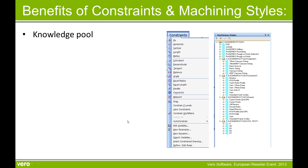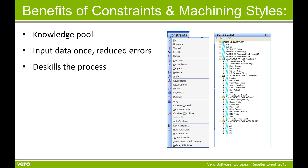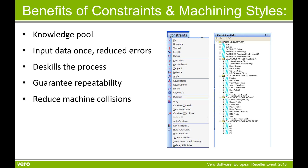Some of the benefits of constraints and machining styles include your knowledge pool. You input the data once, just reducing errors. We'll only ever create one constraint drawing. This will de-skill the process and guarantee repeatability. We use the correct machining style, ensuring the correct feed and speeds, depth of cut and spindle speeds. This will help reduce machine collisions and very importantly protects your capital investment.